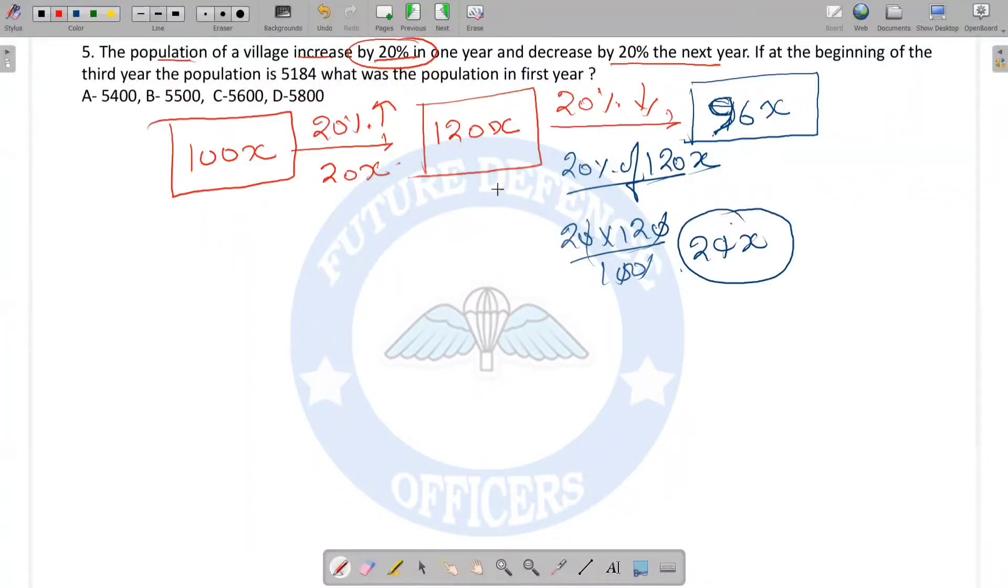You can do one more thing: if this is 100%, and you remove 20%, just directly calculate the 80%. You can do this also—80% of 120x. So you get 80 times 120x upon 100, and again you'll be getting 96x. By either method you get the same result.